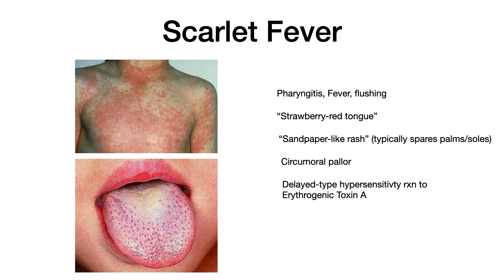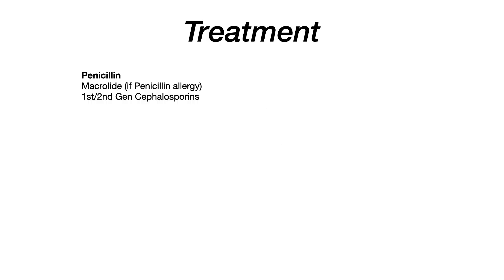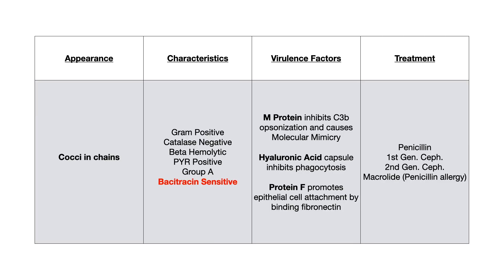Scarlet fever: you'll see pharyngitis plus a 'strawberry red tongue' with circumoral pallor — whiteness around the mouth while the rest of the face has normal flushing — and a sandpaper-like rash that usually spares the palms and soles. This is a delayed-type hypersensitivity reaction to erythrogenic toxin A. Treatment: penicillin first line; if allergic, use a macrolide; first or second generation cephalosporins are also acceptable.